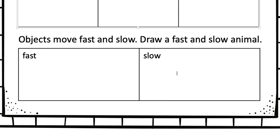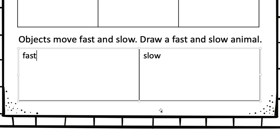Great! Next and last is objects move fast and slow. They move fast and slow. Draw a fast and slow animal. So in this box draw a fast animal. In this box draw a slow animal. Once you're done with that, you're done with this assignment.